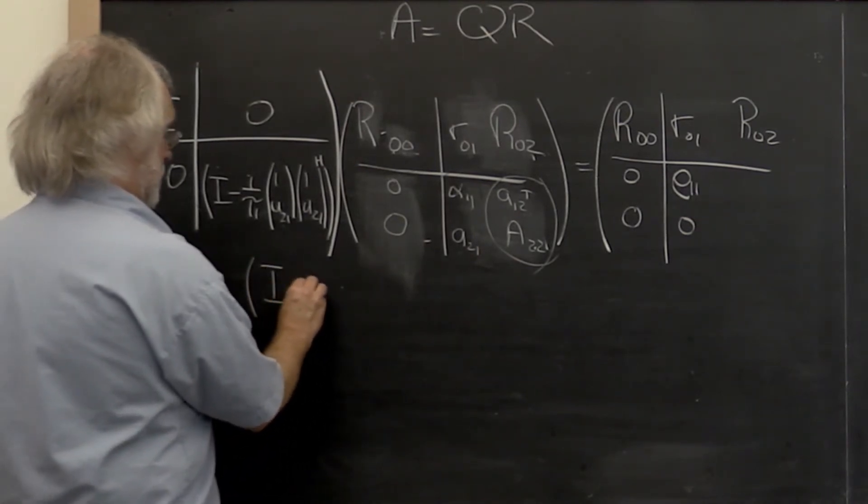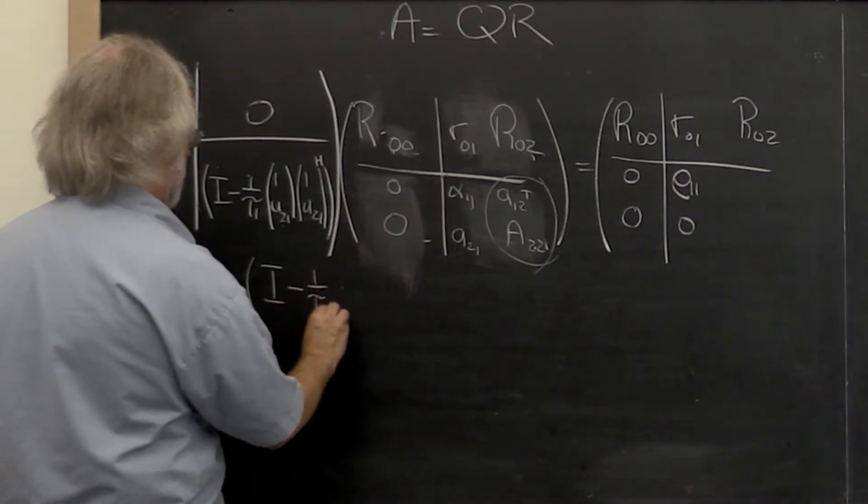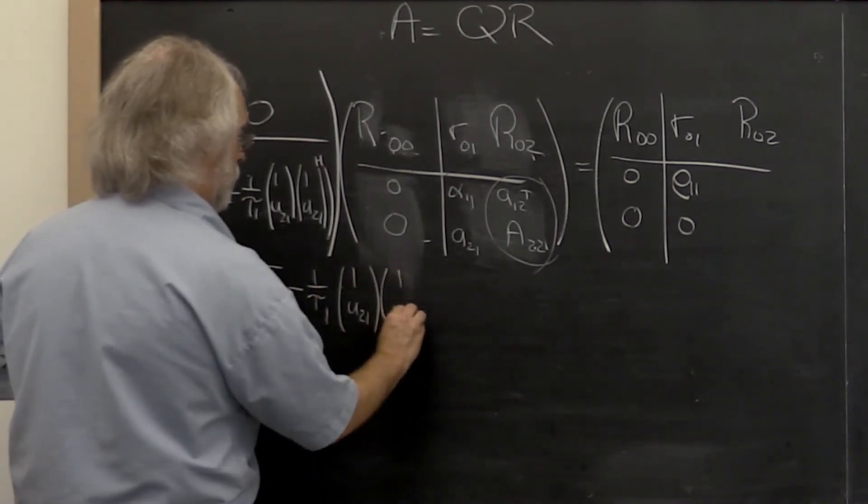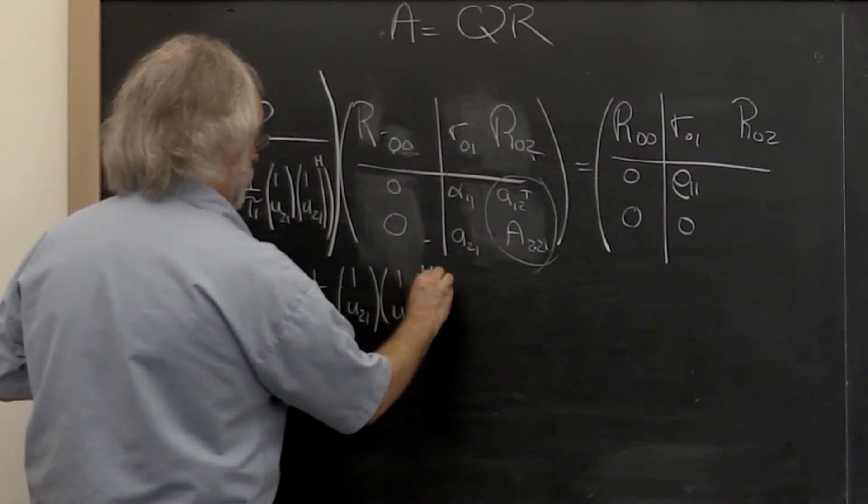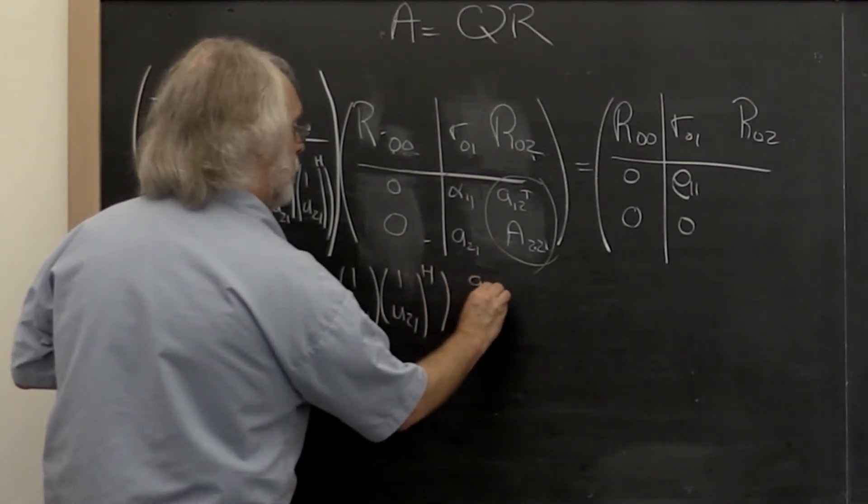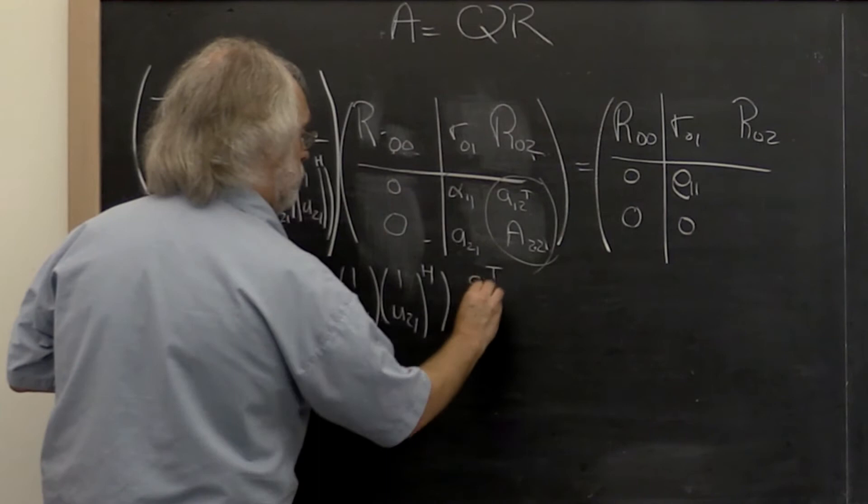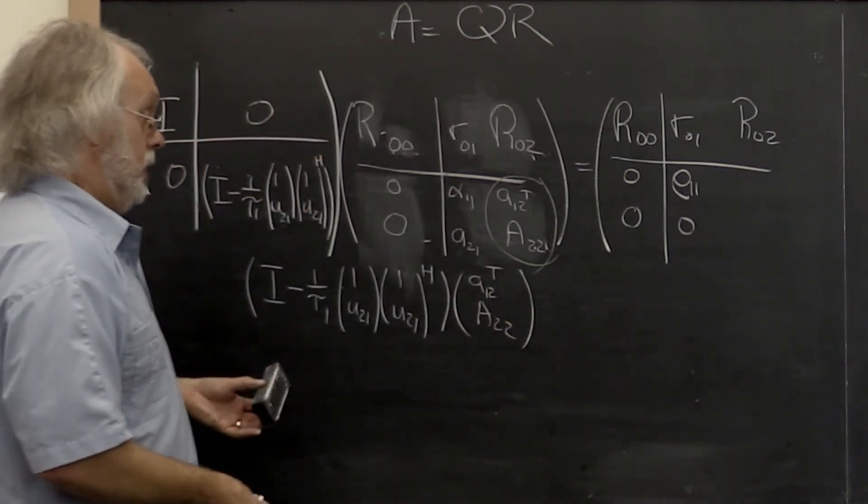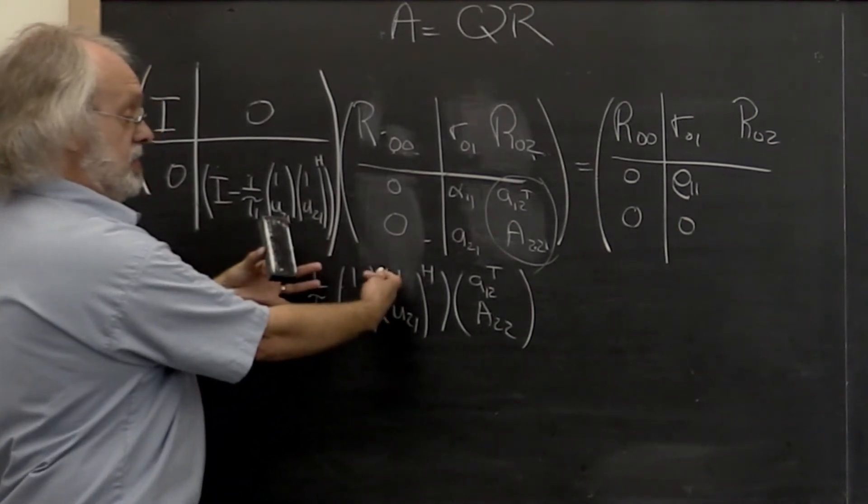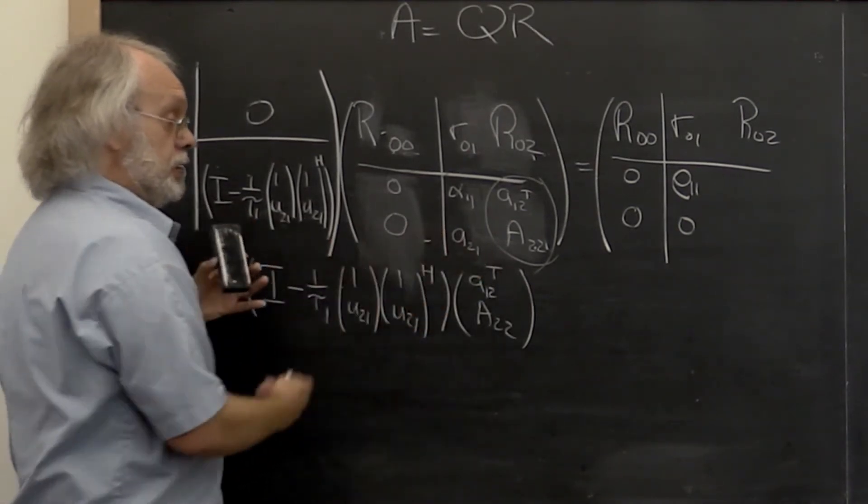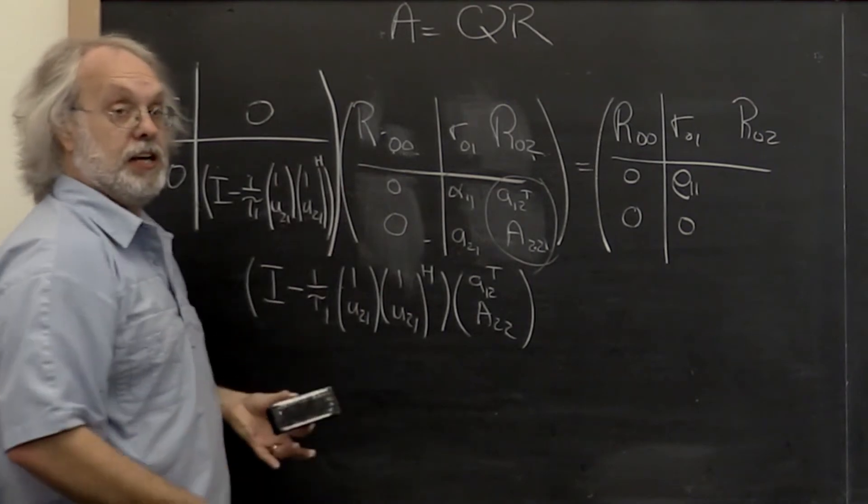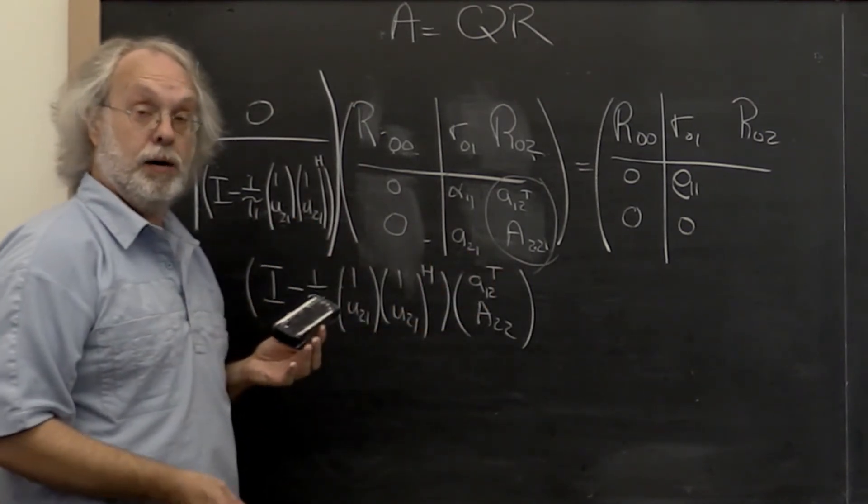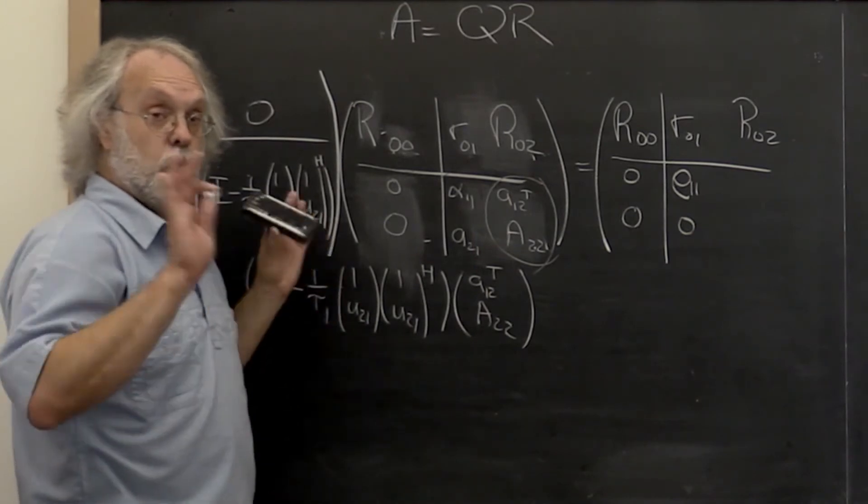Let's write this out. This is what we want to compute. Now you could go and form this entire matrix and then do a matrix-matrix multiply. But forming this matrix is actually order n squared computation and then applying it is order n cubed computation, and that gets way too expensive.